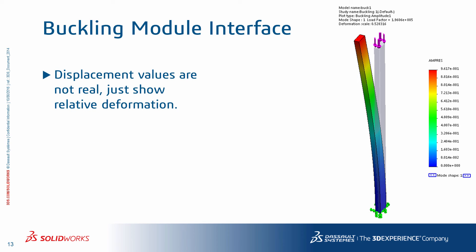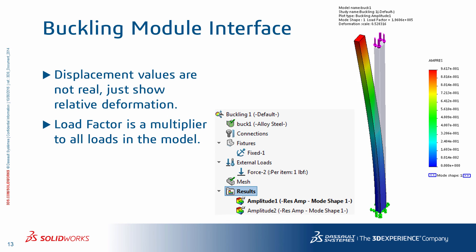We talked about the similarity of the eigenvalue problem in linear buckling and frequency analysis. Very similar to frequency analysis, the displacement values from a buckling analysis mode shape do not represent actual deformations, but just relative displacement of the nodes, thus showing the shape. The actual number to care about is the buckling load factor. Also, if you have more than one load in the model, the calculated buckling load factor would be the multiplier to all the loads in the model.